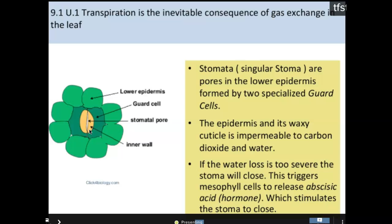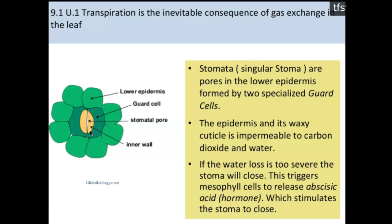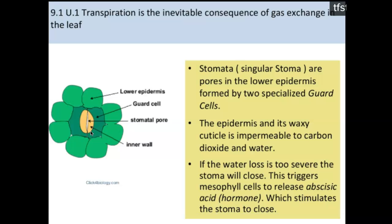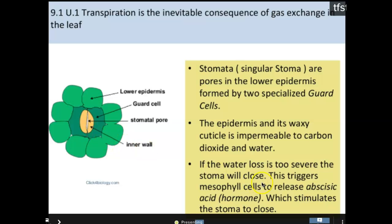Sometimes the stomata cause the water loss of the plant to be pretty severe. And obviously the plant can't lose too much water, but it does need to exchange its gases. So it has to do this balance between getting what it needs and not losing what it needs. So if the water loss is too severe, then the stomata or the stoma are going to close. And the reason why they're going to close is because the mesophyll cells, which I'm going to show you in a minute, release what's known as abscisic acid, which is a hormone, and this is going to tell these stomata to close.